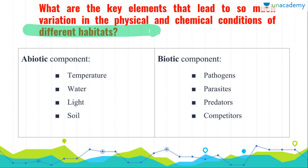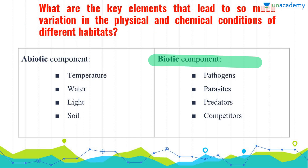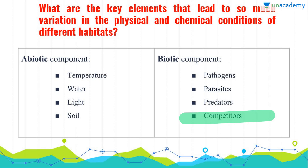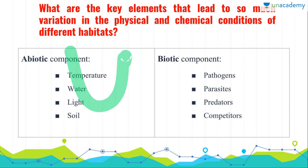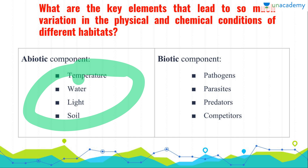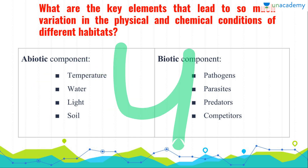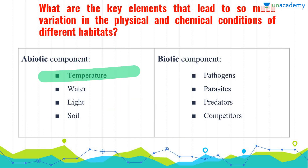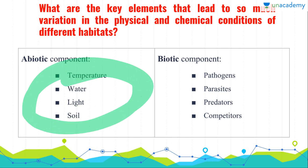Majorly there are two kinds of elements: abiotic elements and biotic elements. In biotic elements we have pathogens, parasites, predators and competitors. But in the abiotic component we have four major abiotic factors: temperature, water, light and soil. Although there are a few more, we are restricted to dealing with these four only because these four are the major abiotic factors.